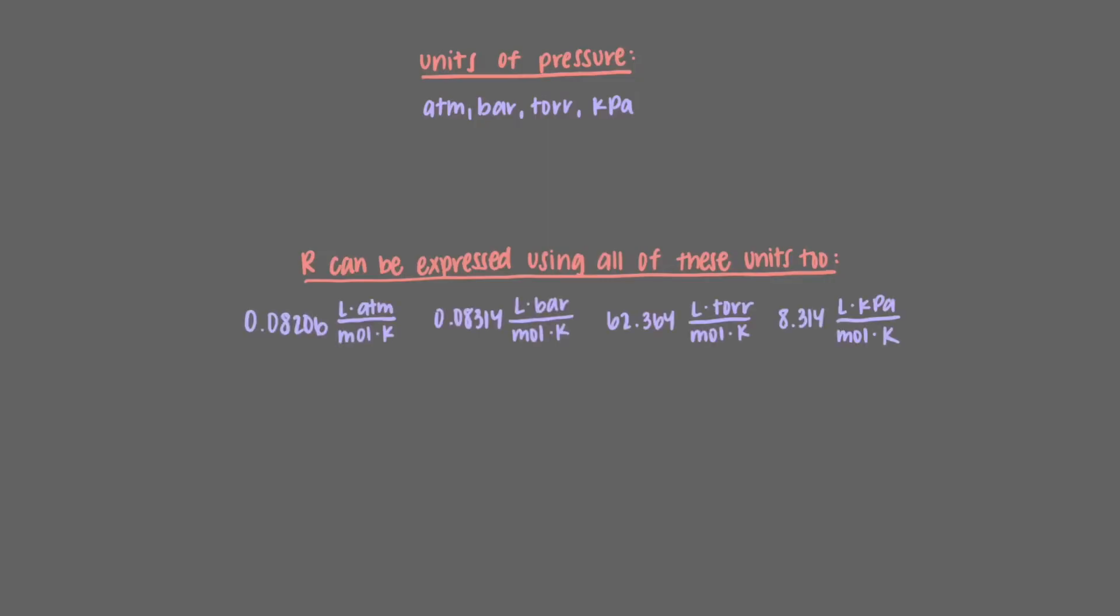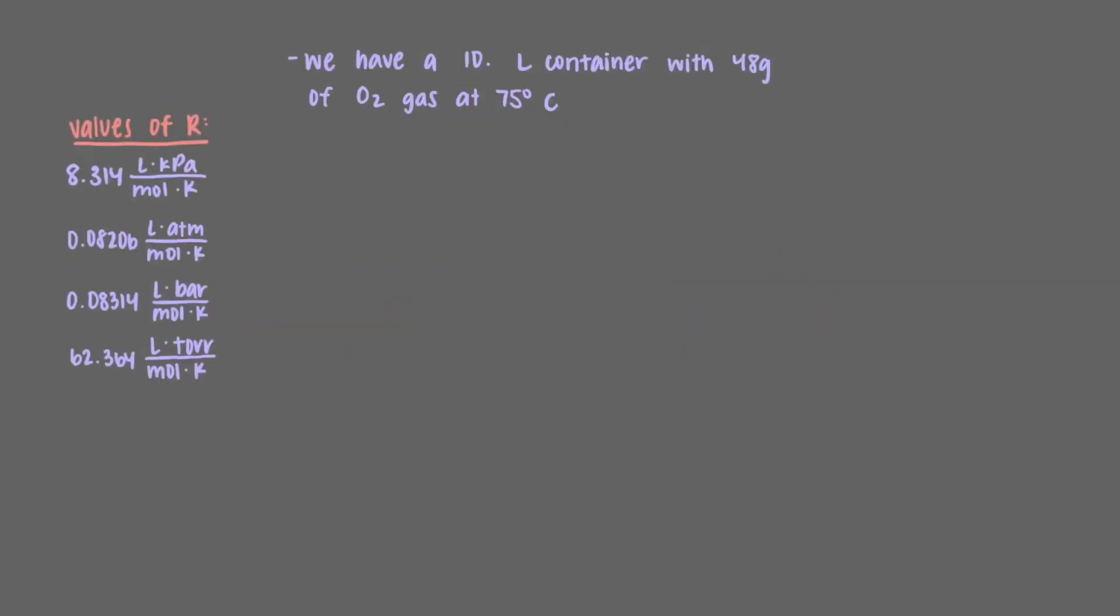These values include all of the following. Let's say we had a 10-liter container with 48 grams of O2 gas at 75 degrees Celsius, and we wanted to calculate the pressure, in atmospheres, inside the container.